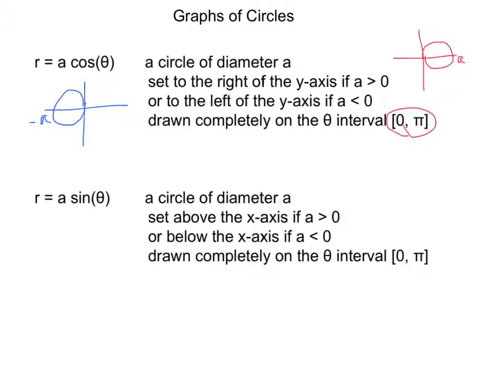Similarly, if we have r equals a times sine theta, you're going to get a circle of diameter a. It'll be above the x-axis if a is greater than 0.